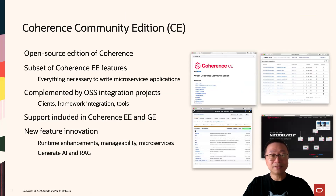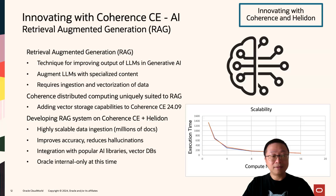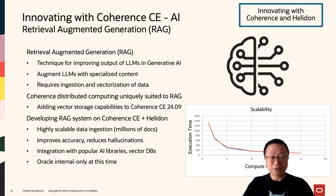Coherence Community Edition was released in 2022 as an open-source edition of Coherence. Over the past two years, we have continued to innovate and add features and functionality through the Community Edition. One major feature recently added is vector database or vector store capability, useful for semantic similarity search and also for RAG — Retrieval Augmented Generation — so that you can augment LLMs like ChatGPT and LLAMA3 with your own proprietary corporate data, internal documents, Confluence, and wikis, providing factual content for generating responses.